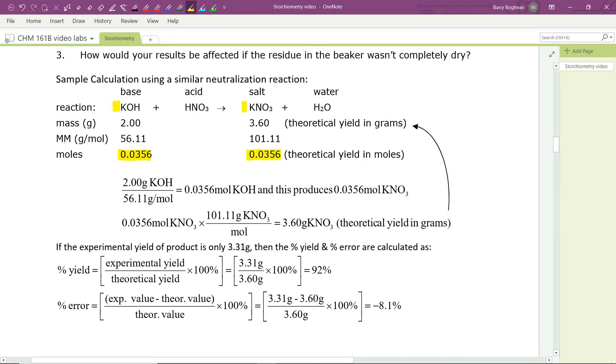How many grams is that? We multiply the number of moles by the molar mass in grams per mole. That gives us the theoretical yield in grams. Again, follow the units. 0.0356 moles of KNO3 times the molar mass in grams per mole. Moles will cancel, giving us 3.60 grams of potassium nitrate. That is the theoretical yield.